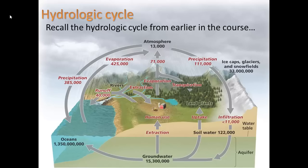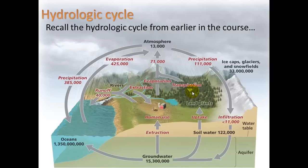Let's remember the hydrologic cycle. What we're seeing here is mostly involving freshwater — the only case involving saltwater is the oceans. We have water existing as water vapor in the atmosphere, and it gets there by evaporation from lakes, streams, ponds, and the ocean. It also gets there by transpiration, which is water vapor coming out of the leaves of trees. The trees take up water from the soil through the roots, use it, and give it off through their leaves.